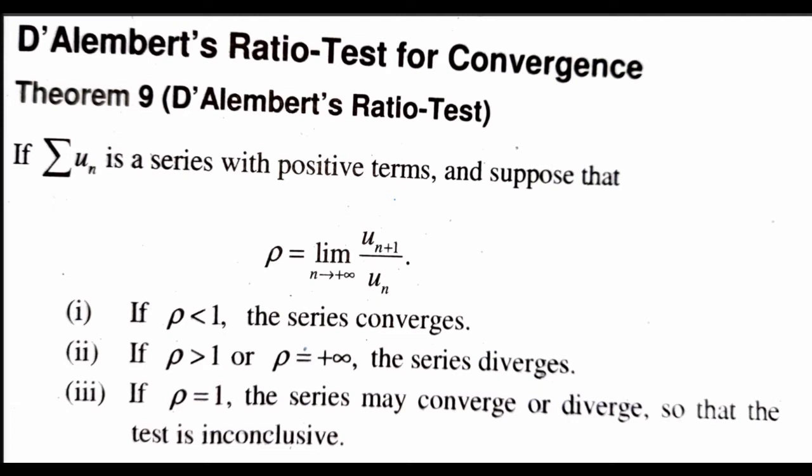The second condition: if rho is greater than 1 or rho equals plus infinity, then the series diverges. The third condition: if rho equals 1, the series may converge or diverge, so the test is inconclusive. This test is known as D'Alembert's ratio test for convergence.